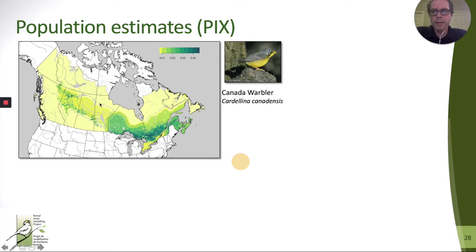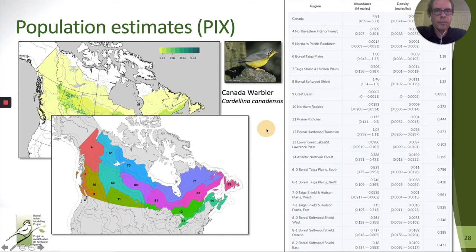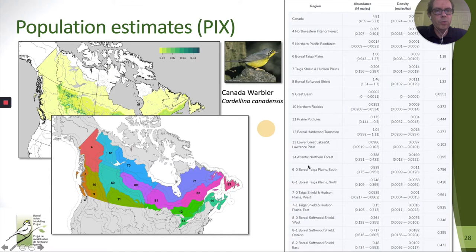The same way we can summarize densities across land cover types, we can look at how those numbers add up within BCR subunits. If we add up all pixels for Canada, we get over 4.81 million males for the whole study area, with lower and upper bounds from the bootstrap distribution. We can do the same exercise for different Bird Conservation Regions or subregions, and if we divide the regional numbers by the area of that region, we get average population density for that unit.